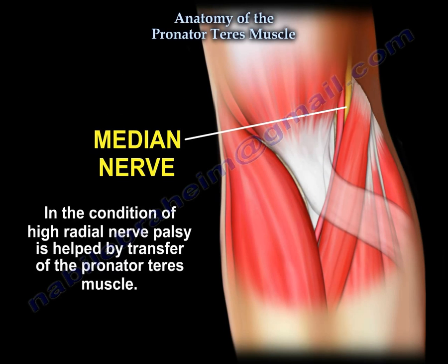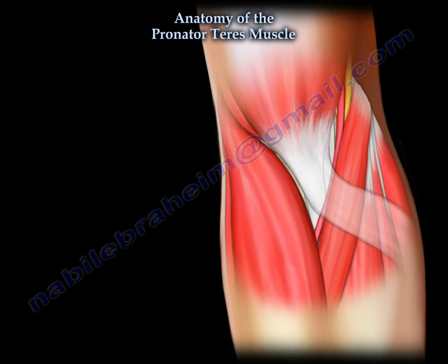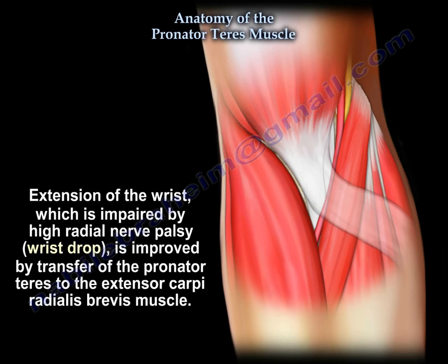The condition of high radial nerve palsy is helped by the transfer of the pronator teres. The extension of the wrist, which is impaired by the high radial nerve palsy and is called wrist drop, is improved by transfer of the pronator teres to the extensor carpi radialis brevis muscle.